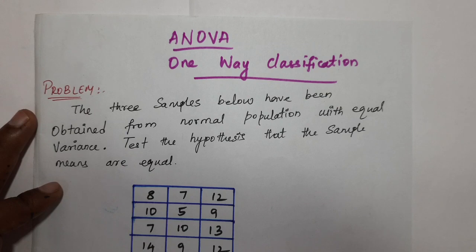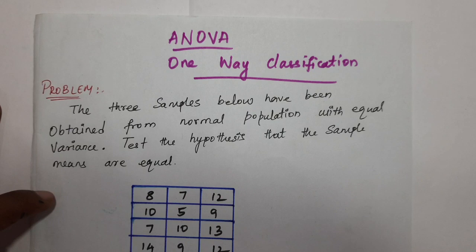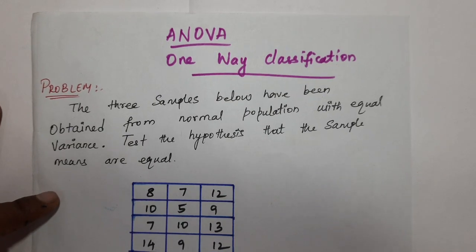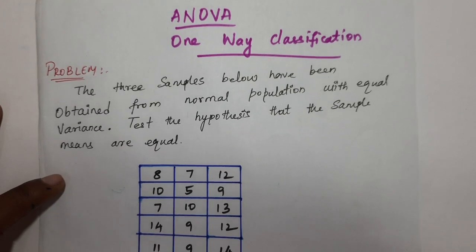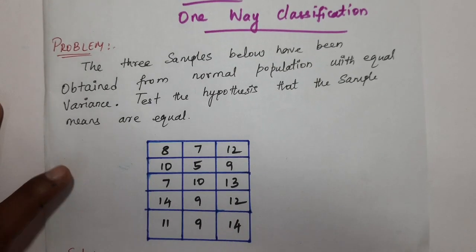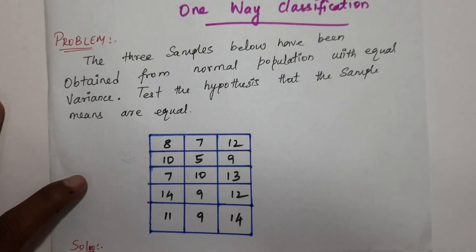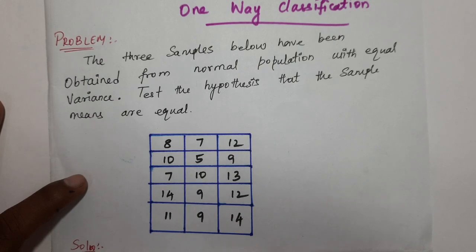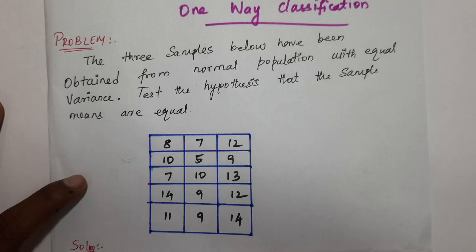ANOVA one-way classification problem: three samples have been obtained from normal populations with equal variance. Test the hypothesis that the sample means are equal. This is a one-way classification ANOVA problem.